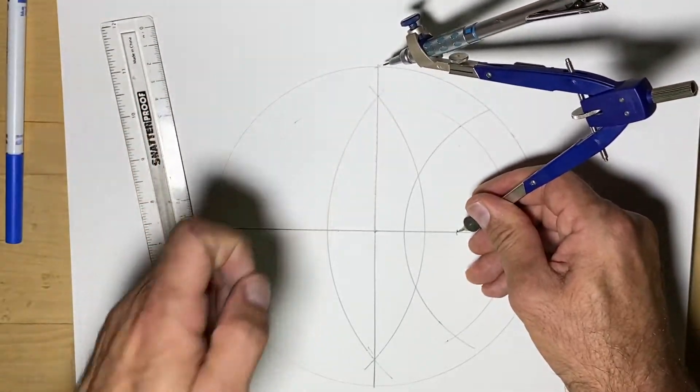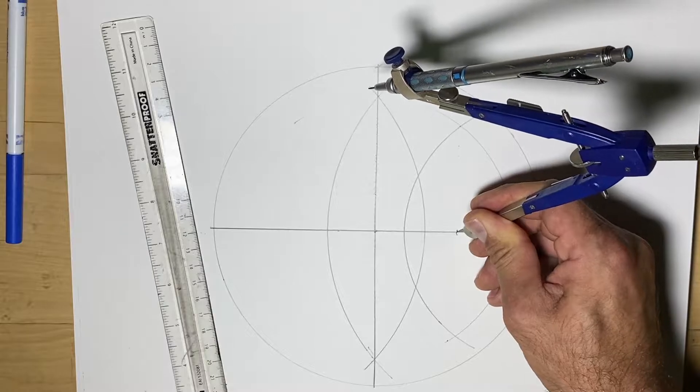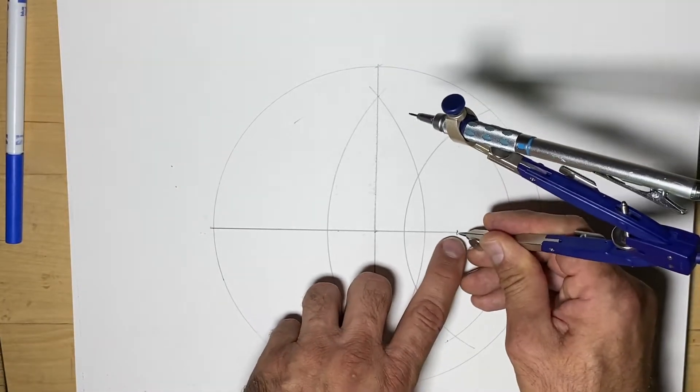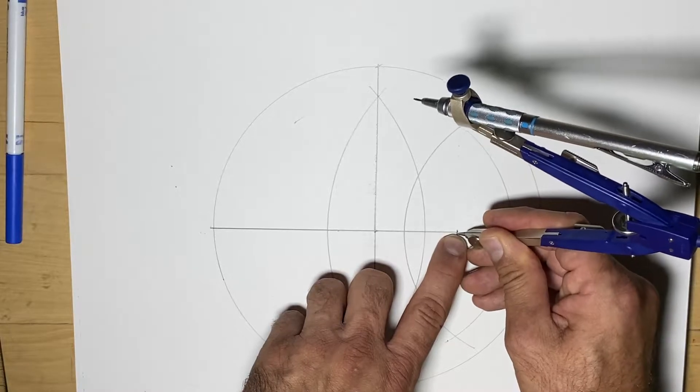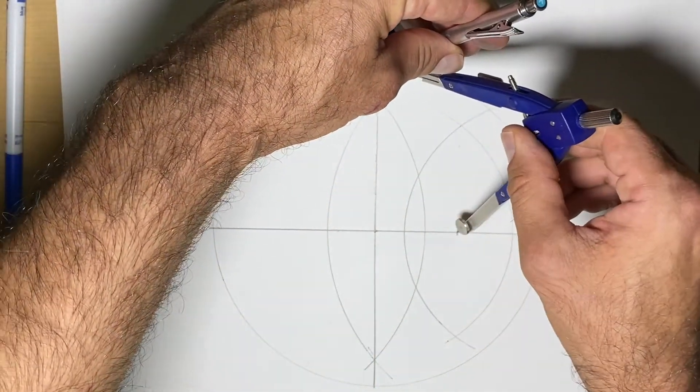Oftentimes when we're doing a demonstration, we're doing it quickly and it might not be perfectly accurate. You really want to make sure you're careful where you put your compass point and where the pencil is, and you want to make sure it's as accurate as possible.